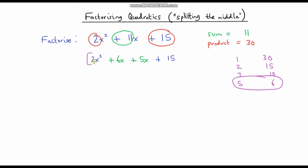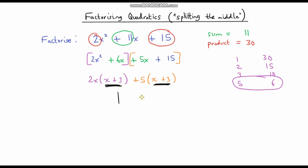Focusing on the first part of the expression, I can factor out a 2x, leaving x plus 3 in my brackets. Then focusing on the second part, I can factor out a positive 5, leaving x plus 3 in my brackets. I've got an x plus 3 in both terms, so I can factor out an x plus 3, leaving 2x plus 5 in my other bracket. I'll let you expand the brackets to verify it's correct.